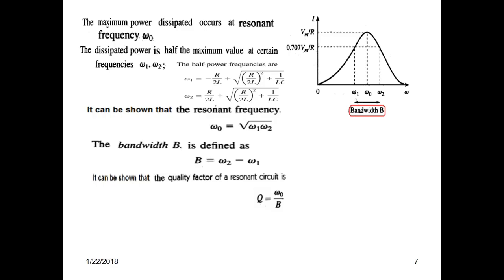Another way of defining or finding the quality factor is: if you know the resonant frequency and the bandwidth, then the quality factor Q can also be defined as omega 0 divided by the bandwidth B.